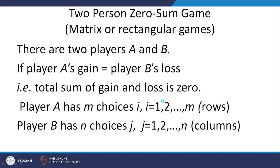In this case, there are 2 players called A and B (or p1 and p2). If player A's gain equals player B's losses so that the total sum is 0, it is a 2-person zero-sum game. Player A has m choices (i = 1 to m) and player B has n choices (j = 1 to n), represented in terms of columns.